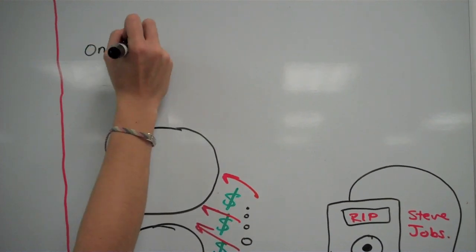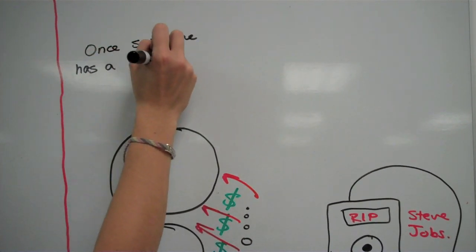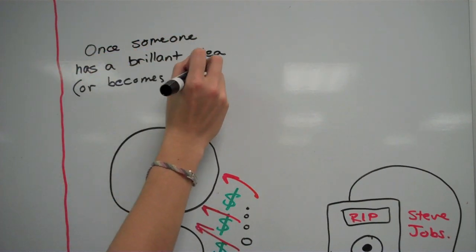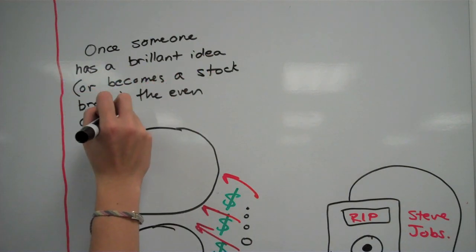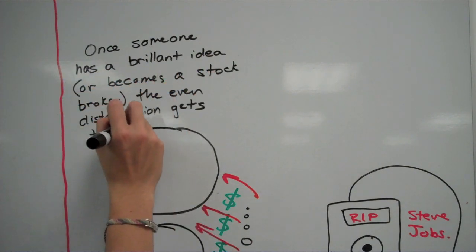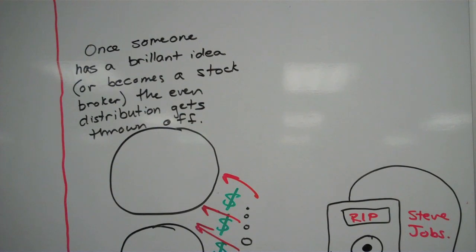Once someone has a brilliant idea, or becomes a stockbroker, he or she starts obtaining an unbalanced amount of wealth, and the even distribution gets thrown off. The entire economic equality deteriorates.